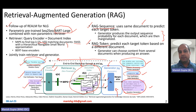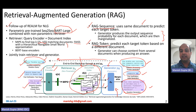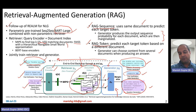The RAG-Token model does something similar, except that for every token it chooses a different set of top-k documents. The generator can therefore choose content from several different documents when producing an answer. That's the interesting part about the RAG-Token model.